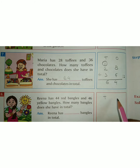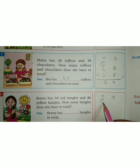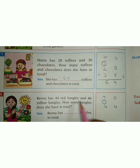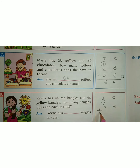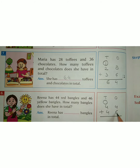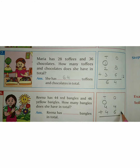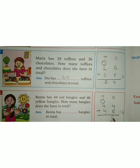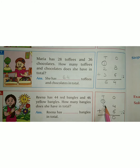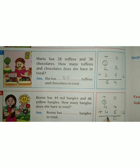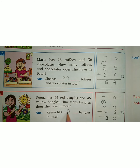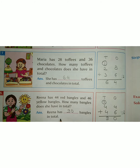So, tens and ones. 44 red bangles plus 46 yellow bangles. 4 plus 6 is 10. So 0 we put here and this one is carry over. 1 plus 4 is 5, and 5 plus 4 is 9. So Reena has 90 bangles in total.